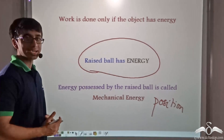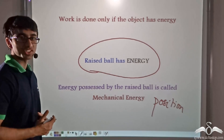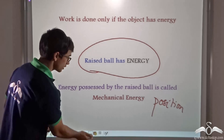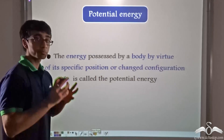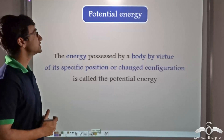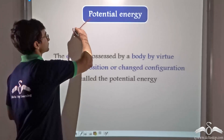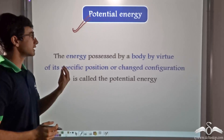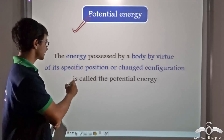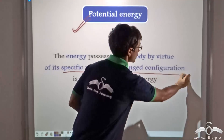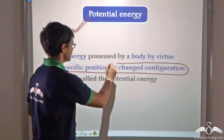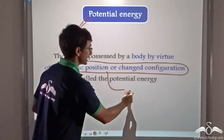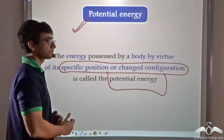Mechanical energy also depends on the position of a particular object. More particularly, this energy is known as potential energy — the energy possessed by a body by virtue of its specific position or changed configuration. This is known as the potential energy of the body.